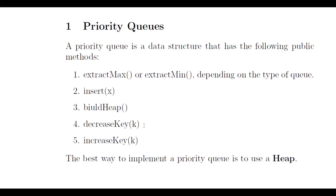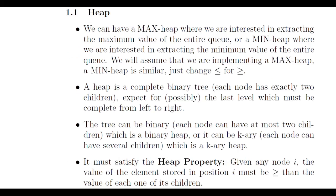This priority queue is going to be implemented using a data structure called a heap. A heap is a tree that satisfies several properties. We can have two different kinds: a max heap and a min heap. We use a max heap when we want to extract the maximum every time, or a min heap when we need to extract the minimum. Importantly, you cannot do both at the same time — you cannot have a min heap and max heap simultaneously. You need two separate data structures if you want to do both.